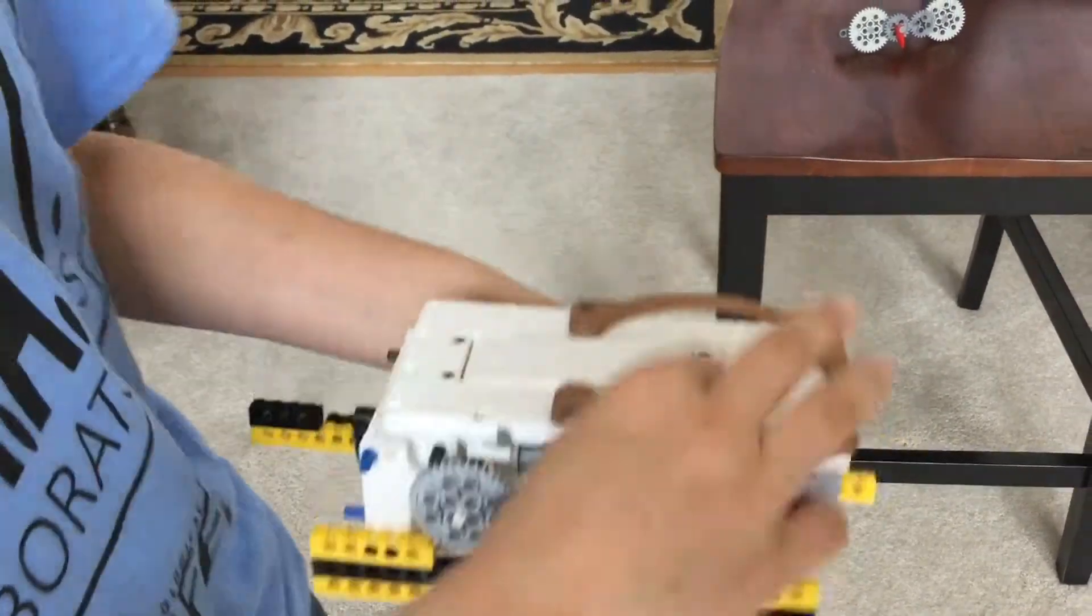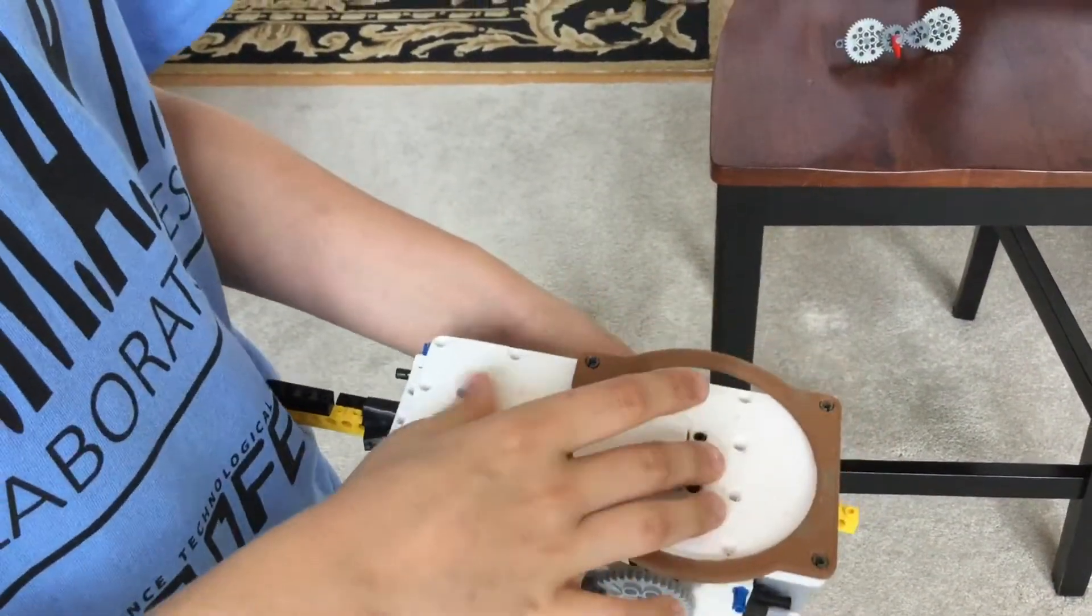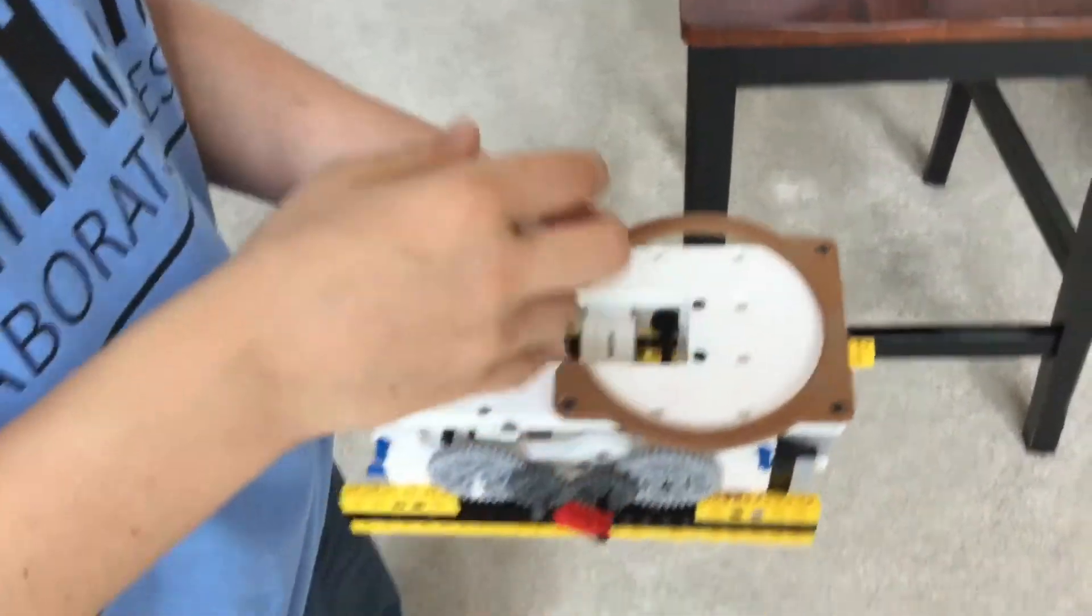This brown thing was designed to hold the cookie inside of here so it wouldn't fall out and we wouldn't put it in the wrong spot.